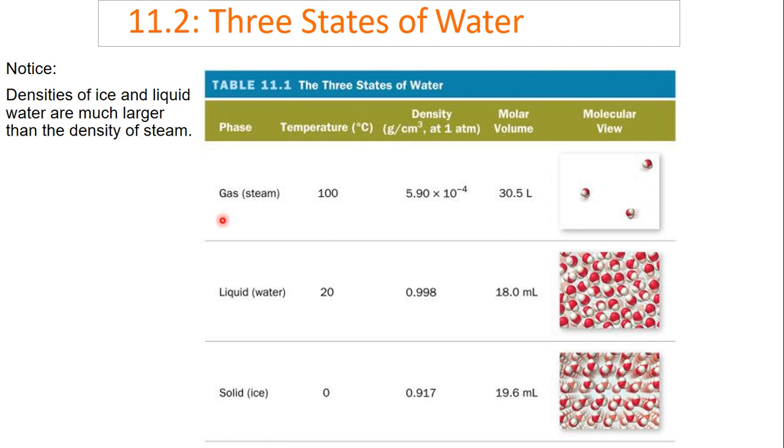Here we have a table from your book that shows us our three states of water: gas, liquid, and solid. We have some properties for those, and we're going to go over these properties and look at some trends.